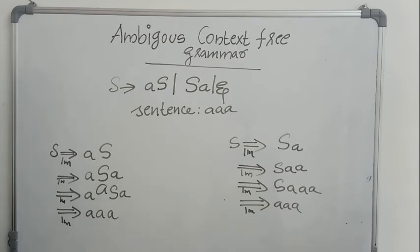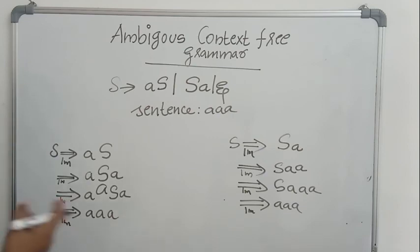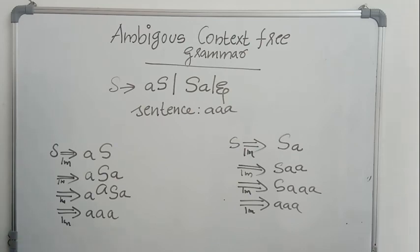Ambiguity is never a good thing, because the compiler will be confused as to which of the available leftmost derivations should be used. So we should somehow eliminate ambiguity, because many parsers cannot even process ambiguous grammars. We should be defining some disambiguating rules so that the ambiguity will be eliminated. We will see in the next video a disambiguating rule and how to eliminate ambiguity for a grammar for arithmetic expressions. Thank you.